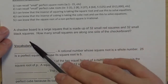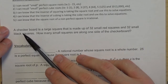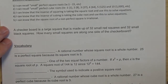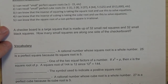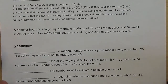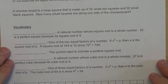You've got an introductory problem here that I want you to be thinking about, and we may talk about this one in class as well. It says a checkerboard is a large square made up of 32 small red squares and 32 small black squares. How many squares are along one side of the checkerboard? Think about that — maybe you can come up with the answer, and we'll revisit it in class.